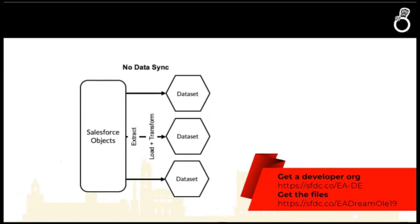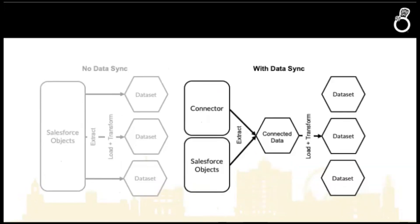When we run our data flow there's an extract part — this takes the Salesforce objects, does a full extract, performs the transformations we want, and then puts it into a dataset. If we enable data sync we get a little bit more. We still have our Salesforce objects, but we also have our connectors, and we sync that data into a cache layer. When we're running our data flow we don't have to go and take all this data out from core Salesforce — it's already stored right there, making the process a lot faster and allowing you to combine data a lot more freely.